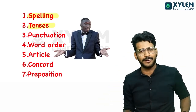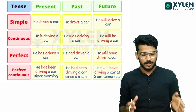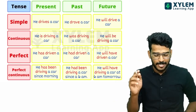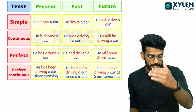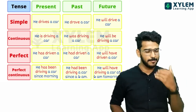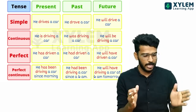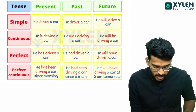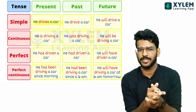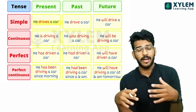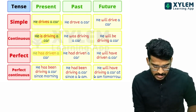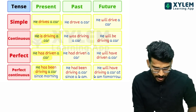Next one is tenses. I have a simple box — just take a screenshot, it will be useful. Simple present, simple past, simple future. Simple present continuous, present perfect, present perfect continuous. Simple past continuous, past perfect, past perfect continuous. For example: simple present — he drives a car. Present continuous — he is driving a car. Present perfect — he has driven a car. Present perfect continuous — he has been driving a car since morning.